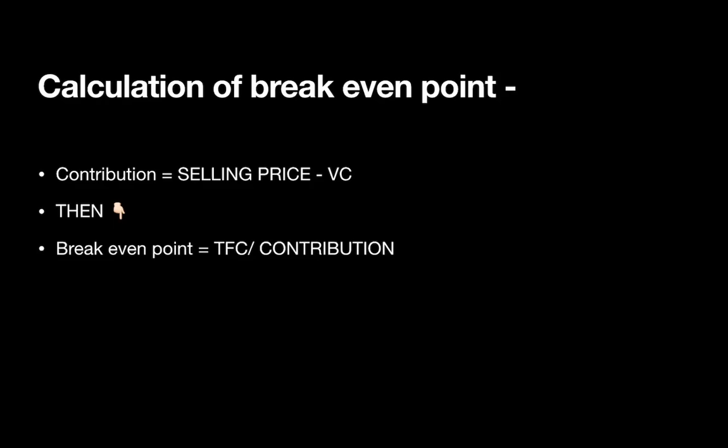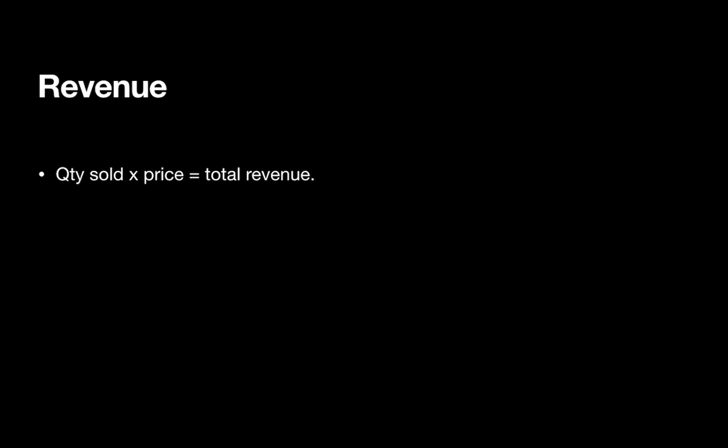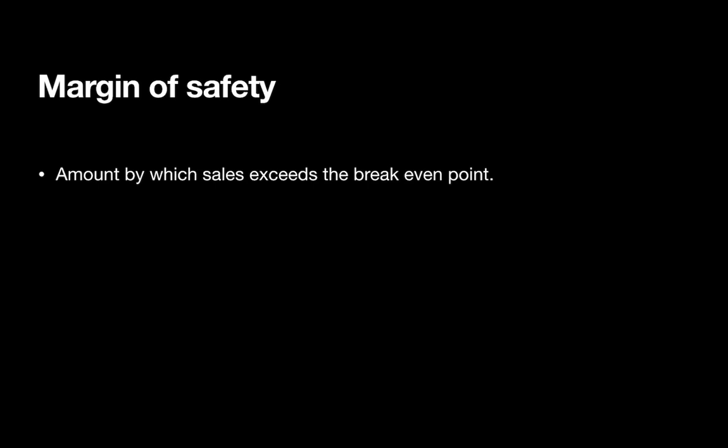To calculate the break-even point, first find the contribution: selling price minus variable cost. Then find the break-even point by dividing total fixed cost by the contribution. Revenue is the quantity sold multiplied by the price, giving you the total revenue.